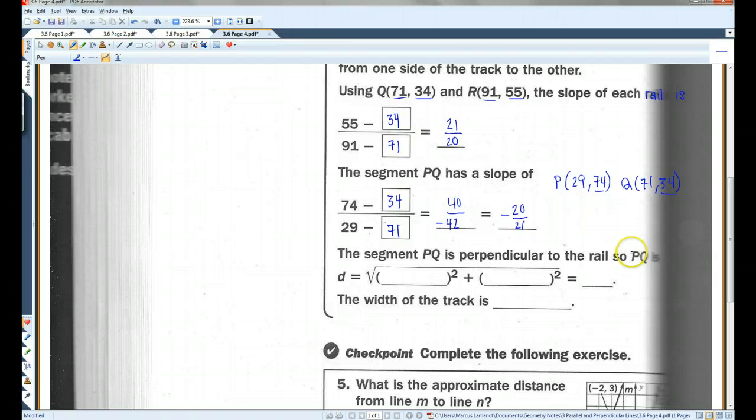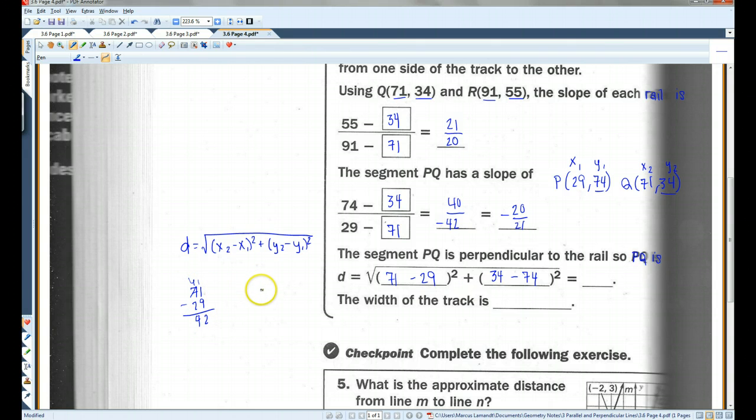So, let's see here. PQ. I'm going to use the distance formula to find the length of it. These are the values I'm going to use. Here's X1, Y1, X2, Y2. And, I'm actually going to write the distance formula over here, just in case you guys don't remember it. D equals square root of (X2 minus X1) squared plus (Y2 minus Y1) squared. So, in this case, X2 is 71, X1 is 29, Y2 is 34, Y1 is 74. 71 minus 29, 42. 34 minus 74. That's going to be 40.